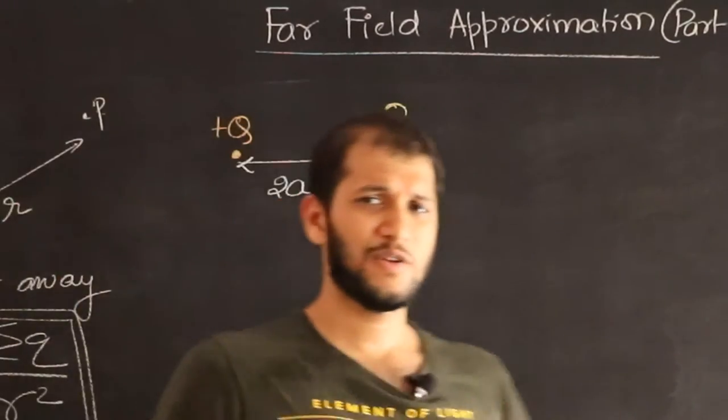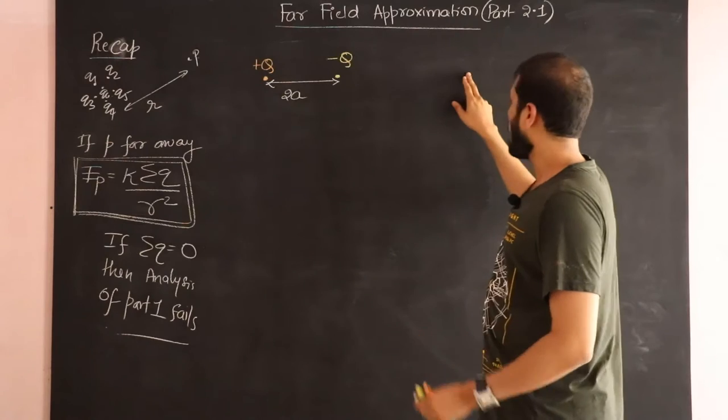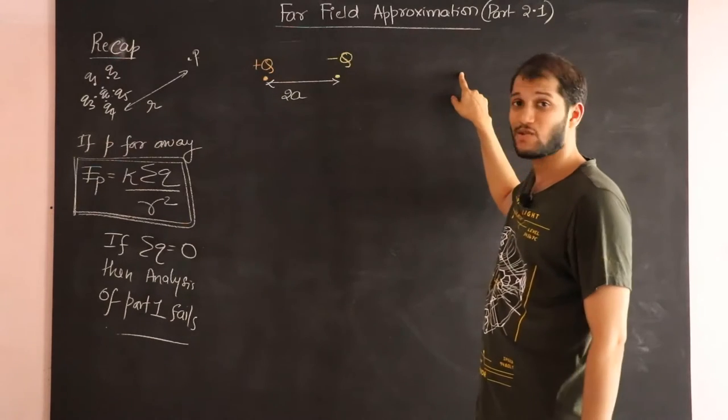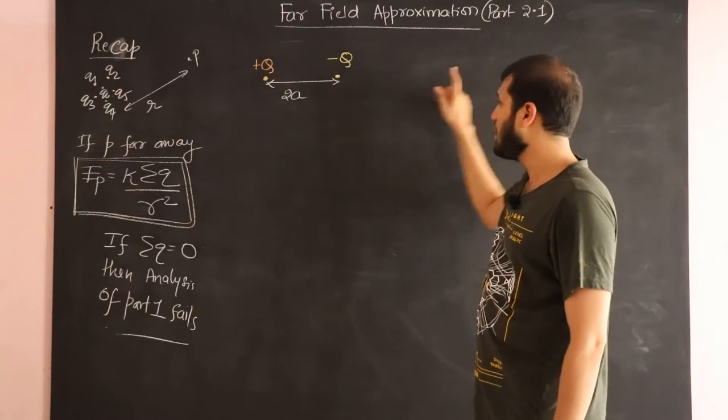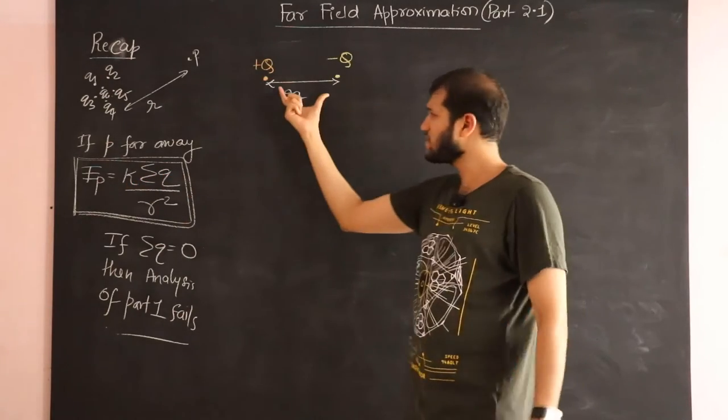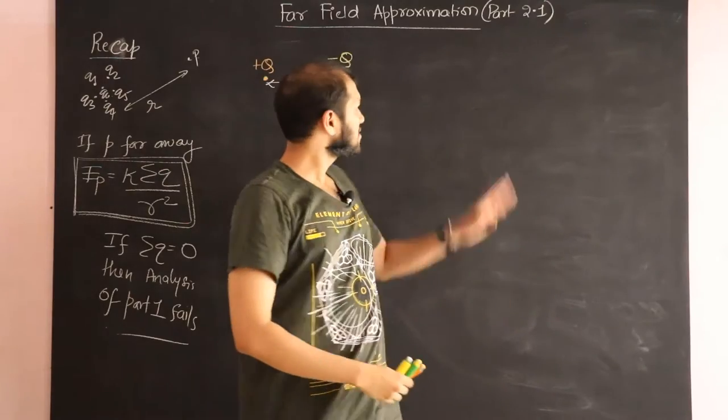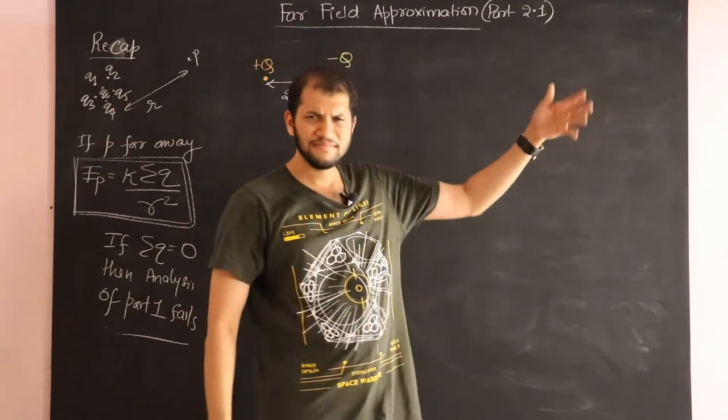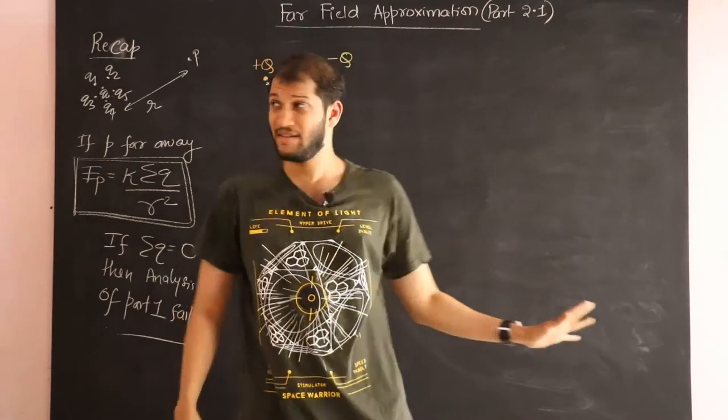If I now ask you what's the electric field anywhere on the axis this side, so imagine a point over here. If we use this far field approximation, imagine I go far away. You can still imagine 2A is about a millimeter and the point P is a kilometer away if you like. So you go far away, I don't care.